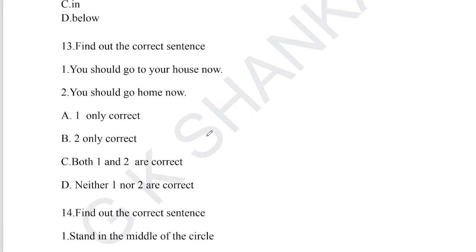Question number 13: find out the correct sentence. Statement 1: 'You should go to your house now.' Statement 2: 'You should go home now.' We should not use 'to' for living places. 'You should go home' is the correct usage. Option B, statement 2 only correct, is the most suitable answer for question number 13.